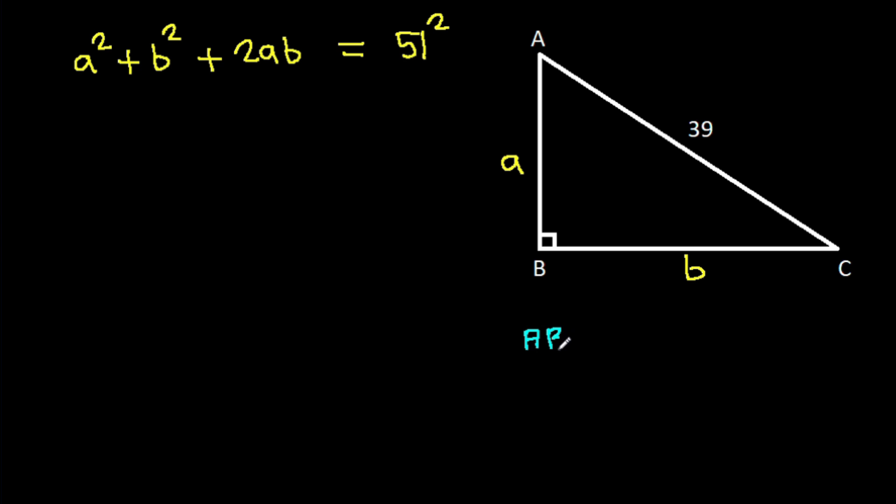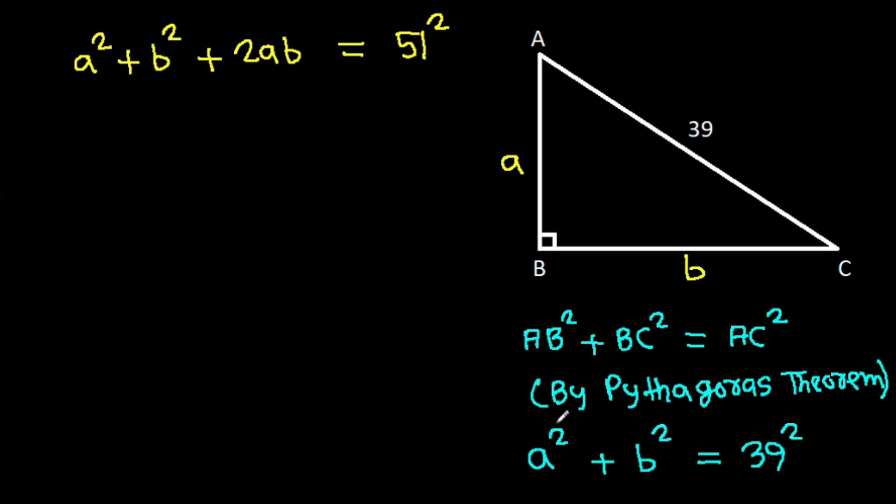And AB squared plus BC squared will be AC squared by Pythagoras theorem. So a squared plus b squared equals 39 squared. So a squared plus b squared is 39 squared.